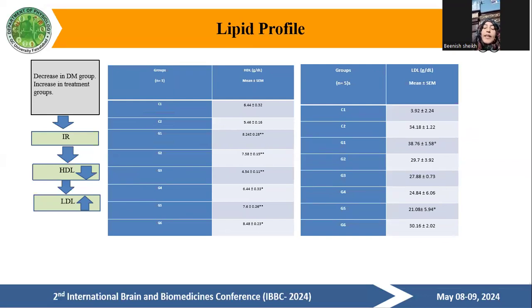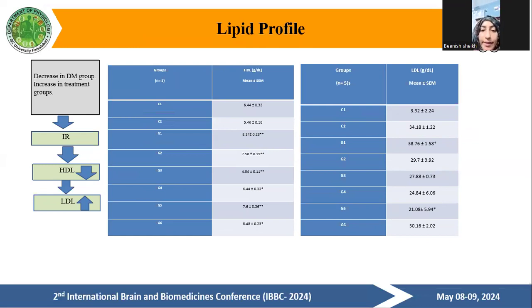HDL and LDL — high density lipoprotein and low density lipoprotein: the level of total protein and HDL also decreases. Insulin resistance decreases HDL level, while LDL increases in the diabetic group.